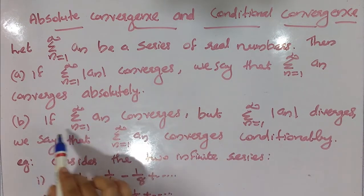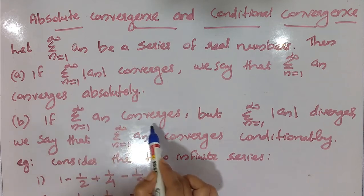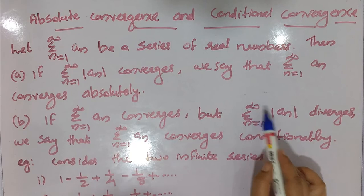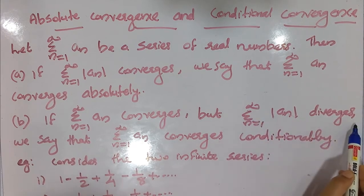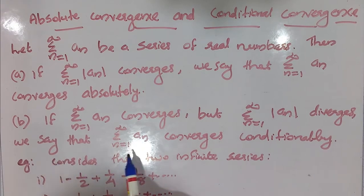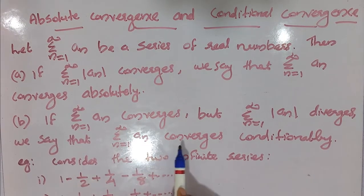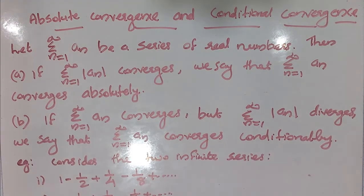And if sigma n equals 1 to infinity of a_n converges, but sigma n equals 1 to infinity of mod a_n diverges, we say that sigma n equals 1 to infinity of a_n converges conditionally.